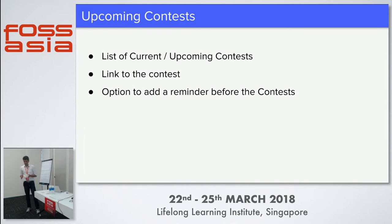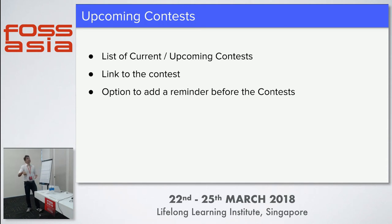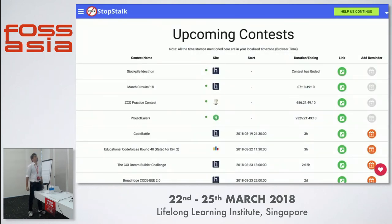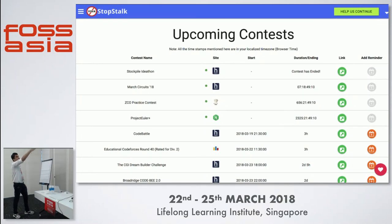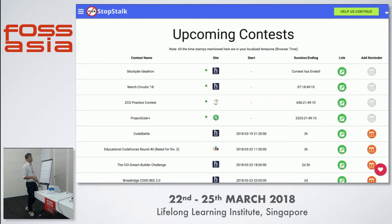There is an upcoming contest page. As I explained earlier, contests are organized by all these sites at particular times - weekly or monthly. Users want to know what contests are coming up so they can register. You can just open this upcoming contest page, see all the contests coming up, and also which are already live. You can go to that contest page or add a Google reminder that reminds you 30 minutes before the contest starts so you can register if it requires registration.